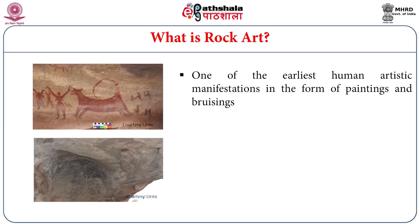One of the earliest human artistic manifestations in the form of paintings and bruising are Rock Art. Painting in the sense that they take a paint and apply it on the surface to get a picture. In the case of bruising, they use some hard material and either beat or engrave it on the hard rock surface to achieve an image. These are the two different types of methods used by people for creating Rock Art.